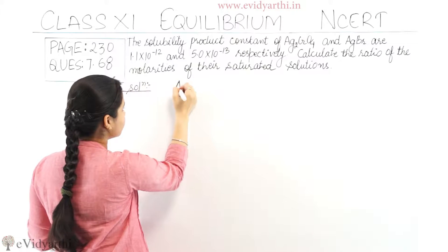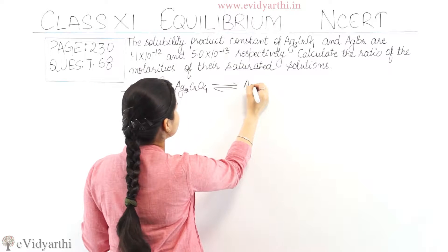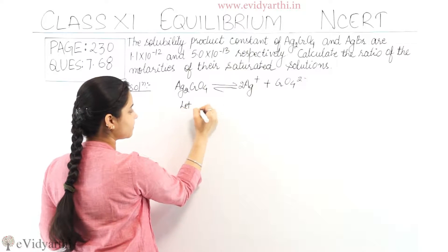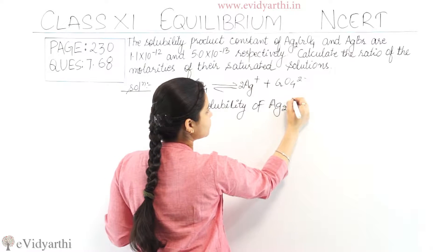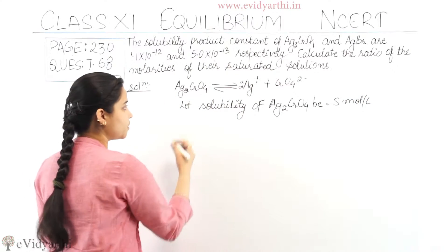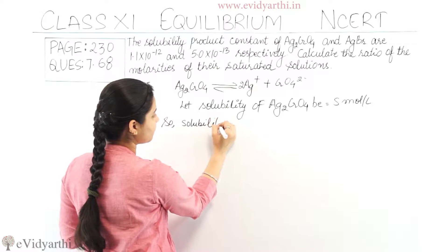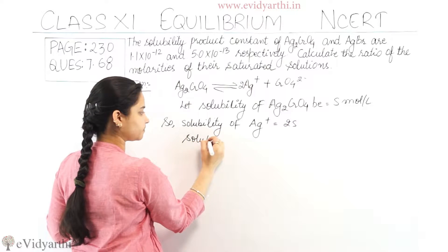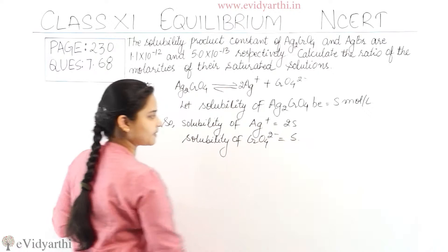First, we take Ag₂CrO₄. So Ag₂CrO₄ at equilibrium gives 2Ag⁺ plus CrO₄²⁻. Let the solubility of Ag₂CrO₄ be equal to S mol per liter. So the concentration of Ag⁺ would be 2S and the concentration of CrO₄²⁻ would be S.